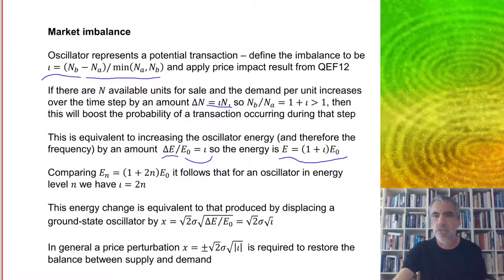So the total energy is going to be given by this. And when we compare with the energy for an oscillator in the nth energy state, it follows that for an oscillator in energy level N, we have this relationship between IOTA and the energy level. So IOTA equals 2N.